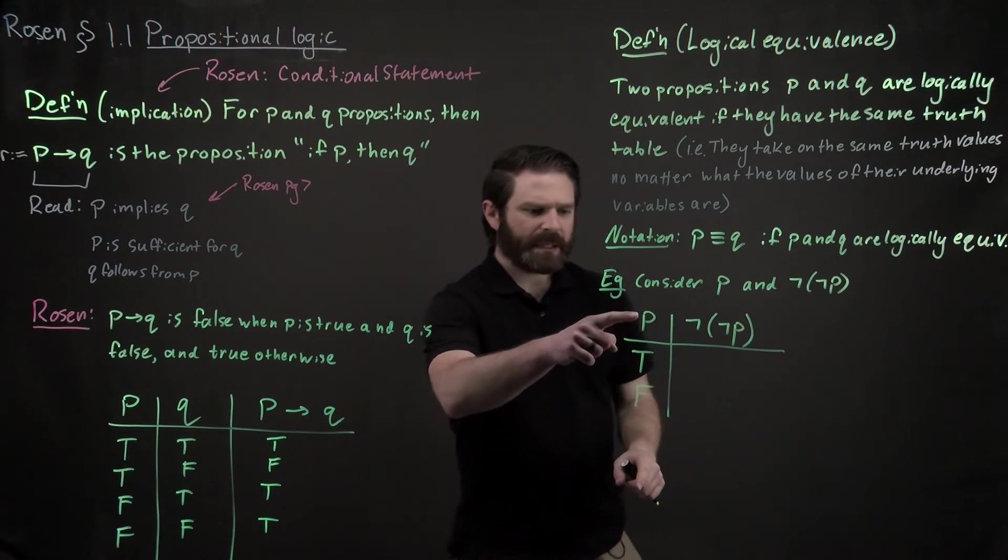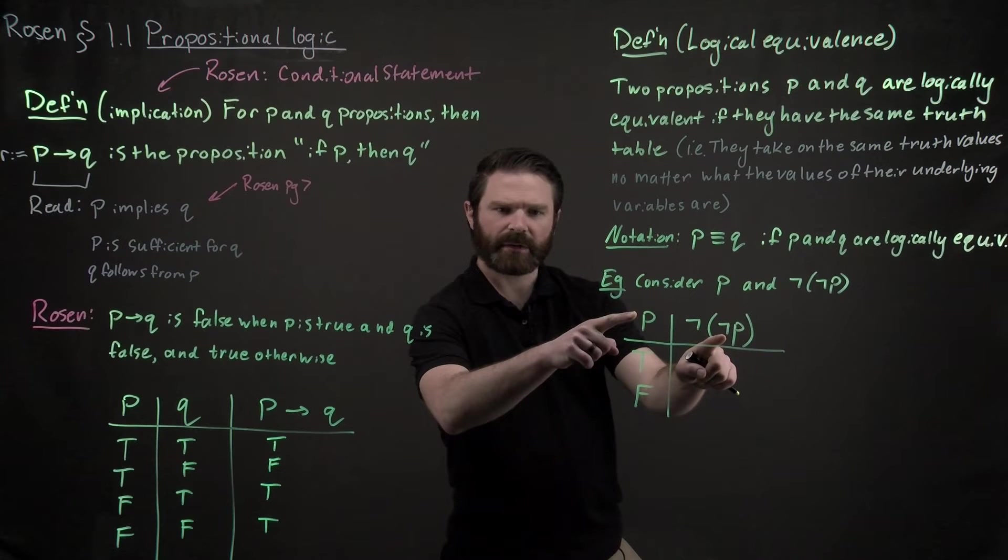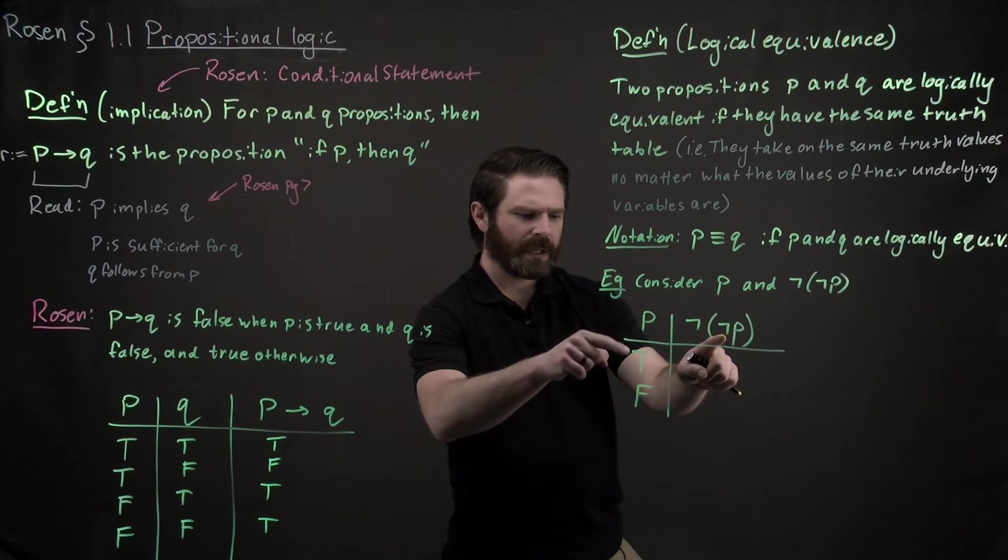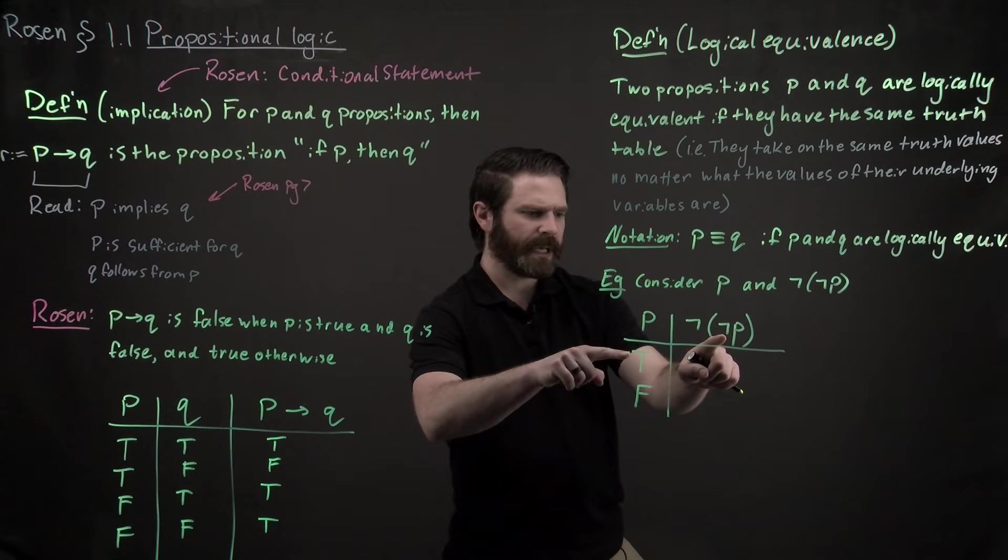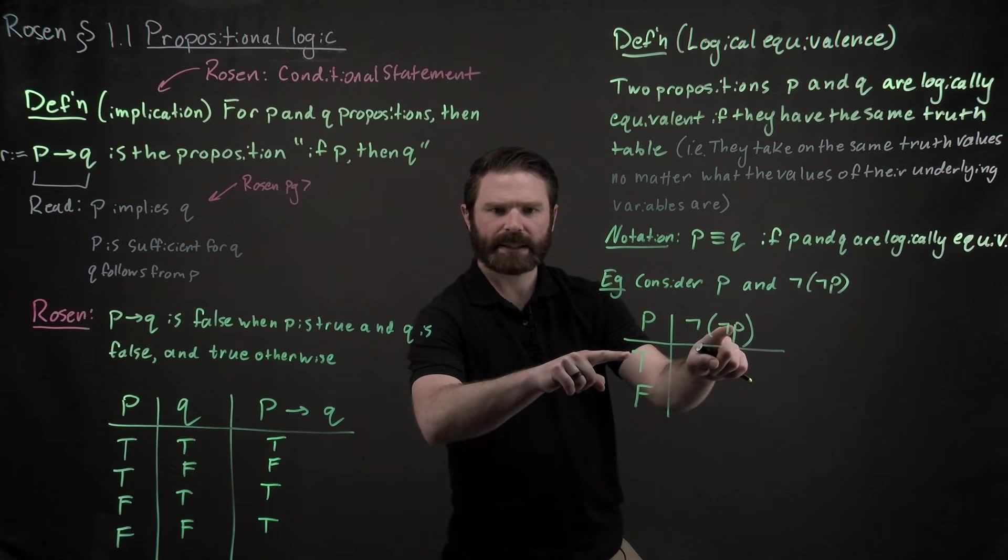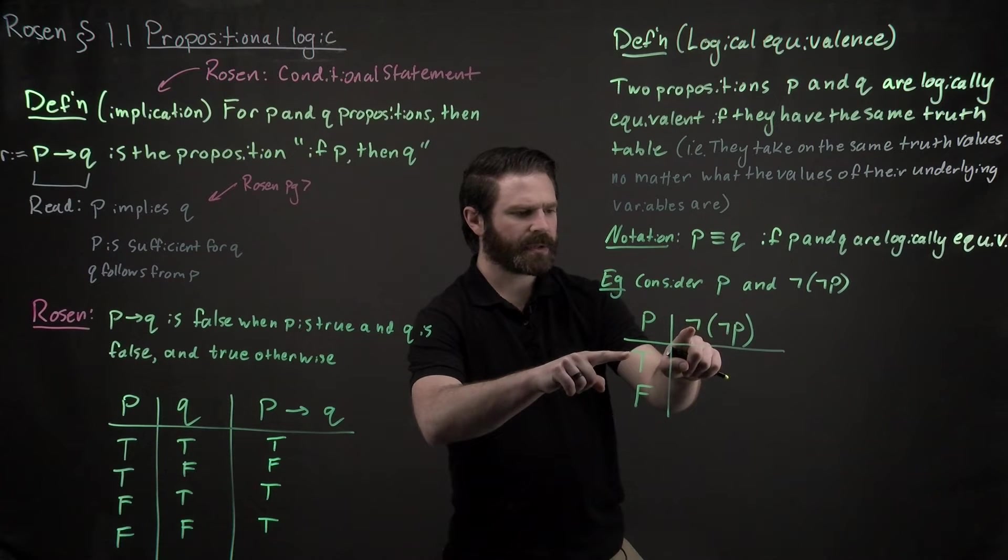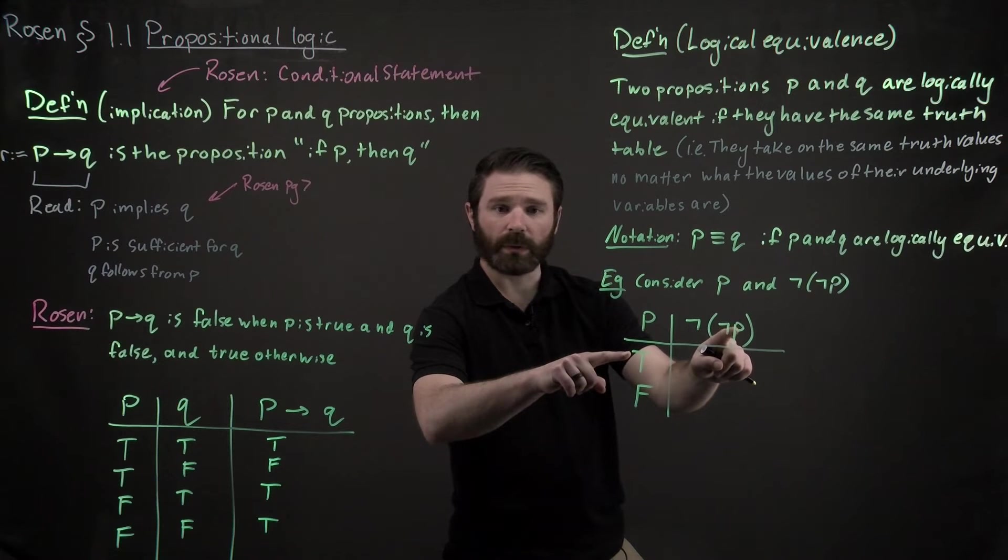So first off, if P is true, this not right here is going to flip it, right? So that's going to become a false inside the brackets. But then we have another not, so it's going to become true again.